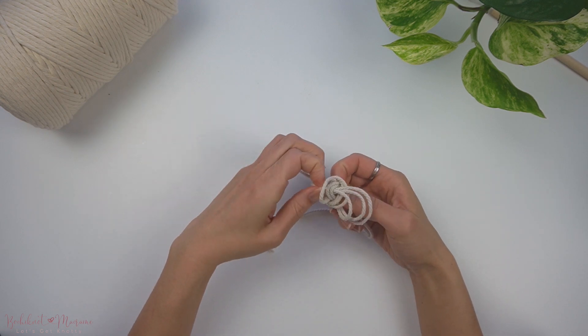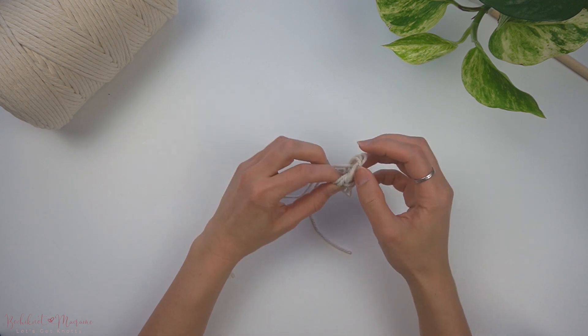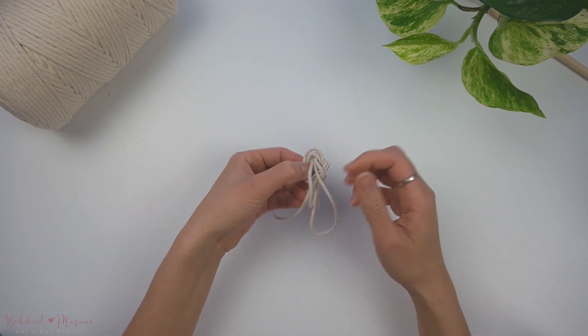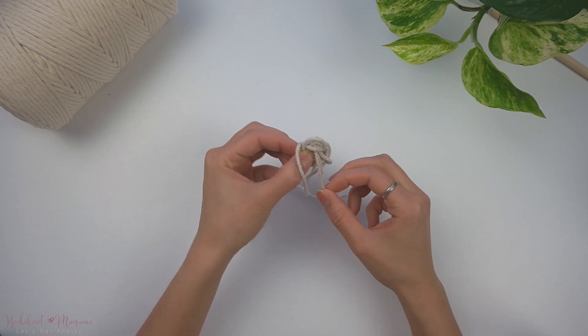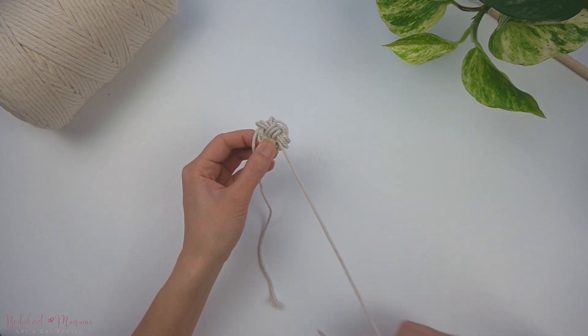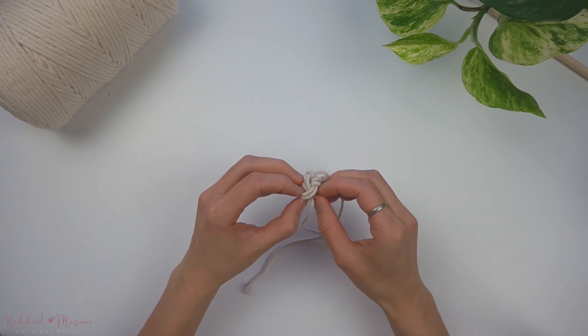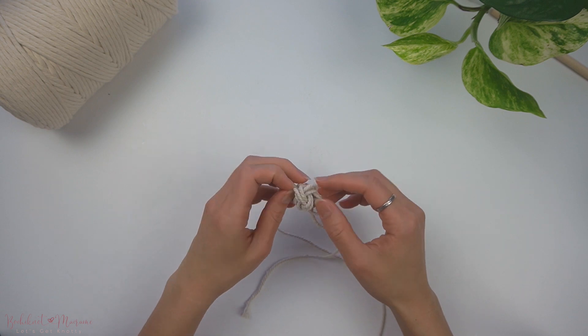You can incorporate the monkey fist knot as an add-on onto many different projects: wall hangings, plant hangers, as a little tassel or decoration. The most popular project I've seen monkey fist incorporated in are keychains. I've also seen them incorporated into many different jewelry items such as earrings or charms or necklaces.